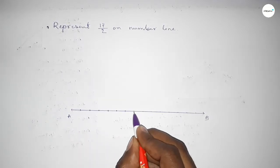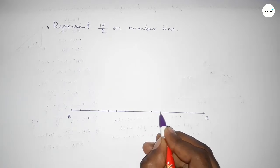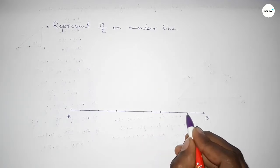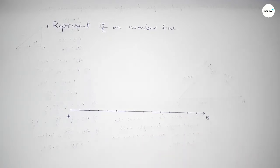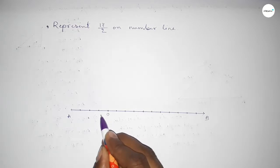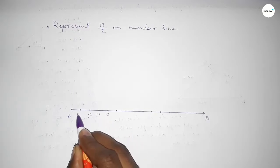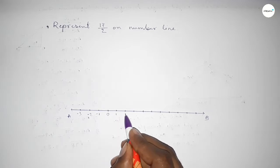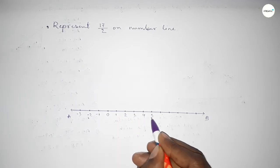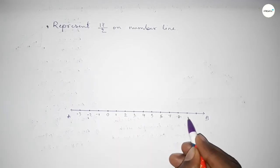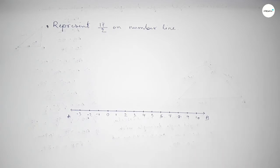Marking the numbers with deep color to understand perfectly. So taking here starting number zero, this side minus one, minus two, minus three, and this side one, two, three, four, five, six, seven, eight, nine, ten.